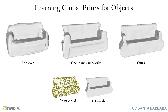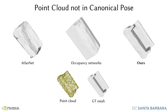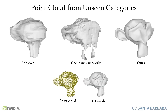Existing deep learning approaches learn priors at the object level and produce plausible results in the presence of noise and sparsity. However, they fail to generalize when the point cloud is in a pose different from the one used in training, and they also fail to generalize to unseen categories.